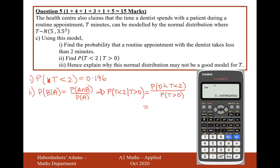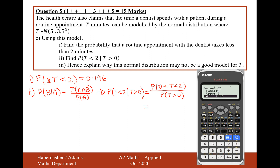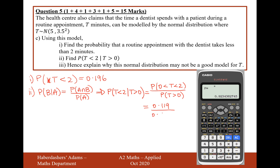Let's work out the probability that the time the patient spends with the dentist is between 0 and 2 minutes. Go to the calculator, lower boundary of 0, upper boundary of 2, standard deviation 3.5, mean of 5, and that gives us 0.119. I'll save this to make sure my answer is as accurate as possible — press STO then the A button. Now we need to work out the denominator: go back into the same mode with a lower boundary of 0 and no upper boundary, working out P(T ≥ 0), and that gives us 0.923.